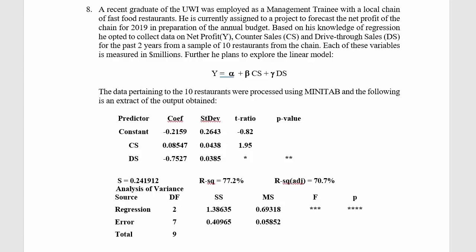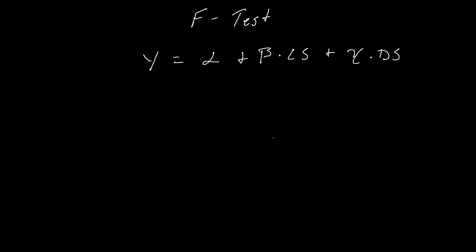If we look at the same question from the previous videos, we tested to see if beta is significant and if gamma is significant in explaining the model. Now we may want to test the model as a whole, or test to see if the explanatory variables CS and DS are both simultaneously not explaining the model. That is specifically why we use an F-test. Some people may call the F-test a test for simultaneous nullity of the slope coefficients of explanatory variables.